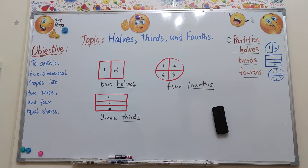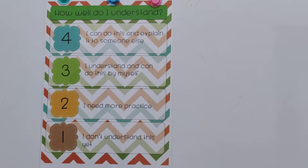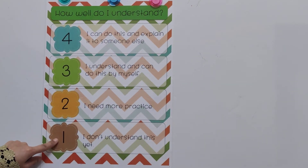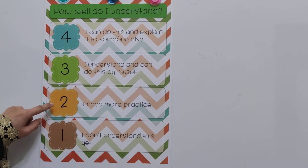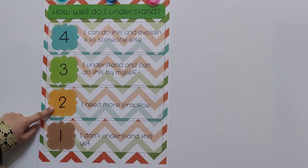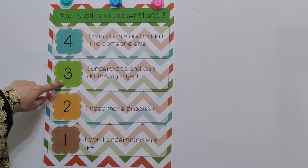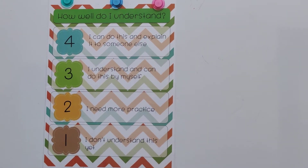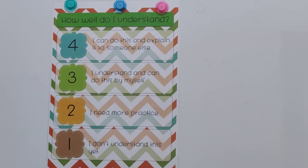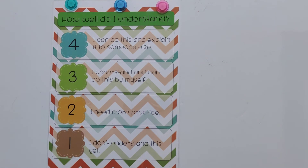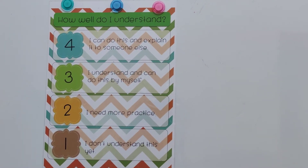Now let us grade the lesson. How well do you know the lesson, starting from one to four? If you choose number one, that means you don't know the lesson and you need to watch the video again. If you choose number two, that means you need a little bit of practice. If you choose number three, that means you know the lesson and you can solve it by yourself. And if you choose number four, that means you know the lesson, you can solve it by yourself, and you can explain it to someone else — which is great.